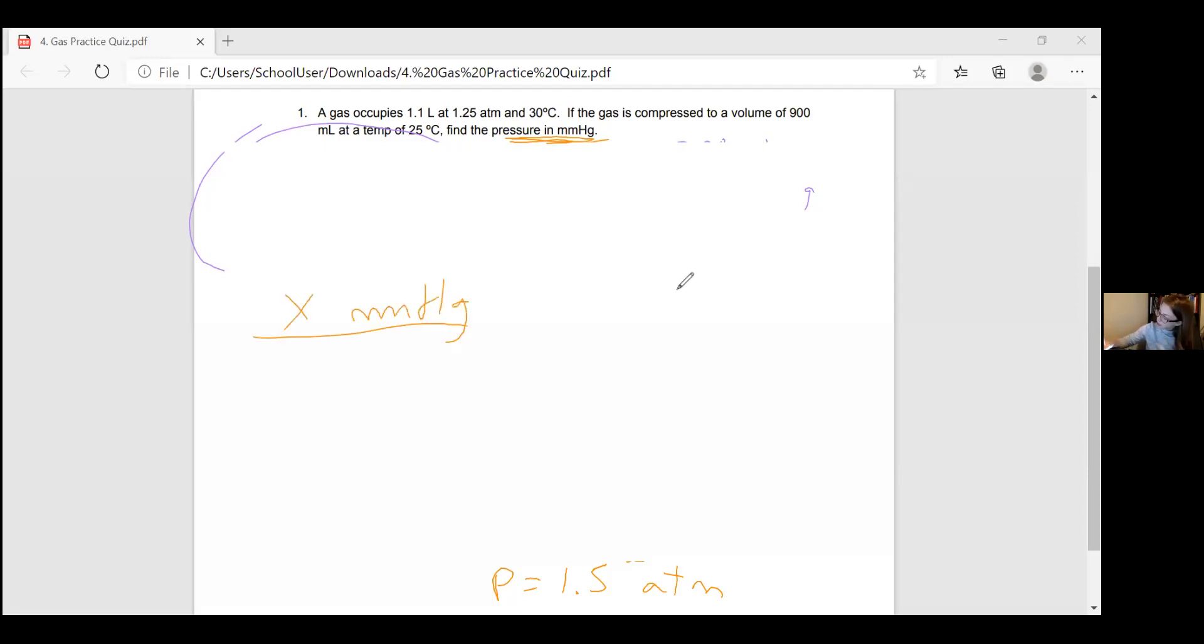So I want to convert that 1.5 atm into millimeters of mercury, because that's the question asked for. I'm solving for millimeters of mercury. I know the pressure in atm. To finish my conversion, I need to grab the numbers that are given. They're actually given at the top of the quiz. For millimeters of mercury and atm, and then I'm cross-multiplying. And I'm done.